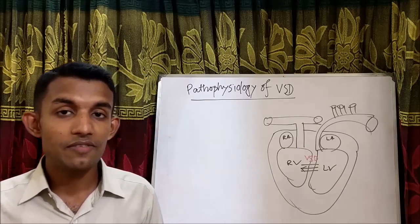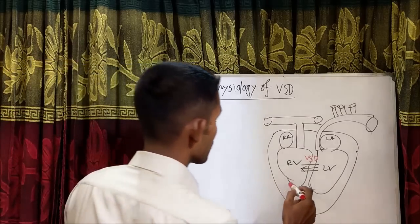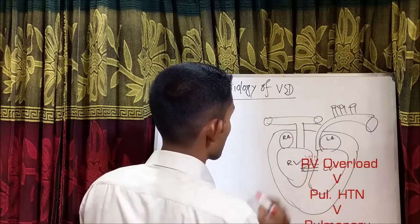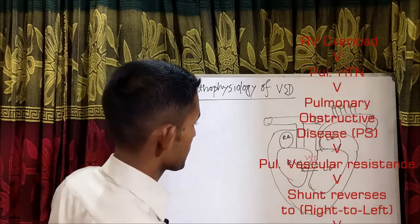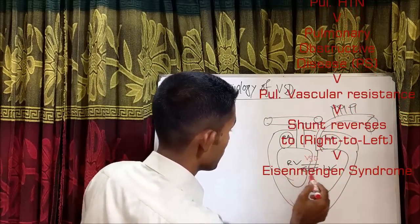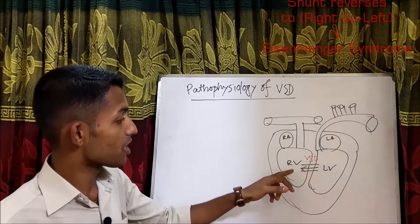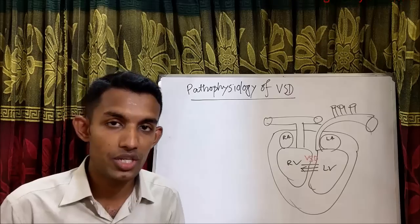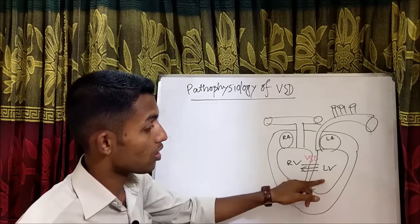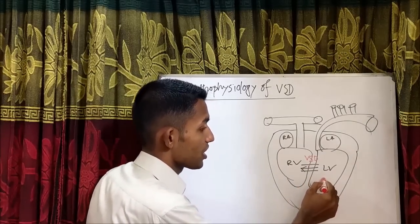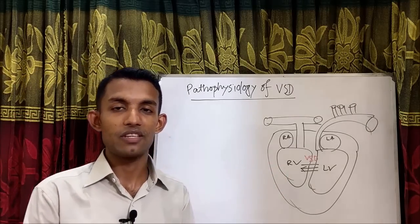But when pulmonary vascular resistance rises above the systemic vascular resistance, the shunt reverses. Whenever there is RV overload and excessive pulmonary hypertension, pulmonary obstructive disease develops so that pulmonary vascular resistance increases and the shunt reverses from left to right to right to left. Whenever the shunt reverses and becomes right to left, it is called Eisenmenger syndrome. At that time deoxygenated blood mixes with oxygenated blood, so the left ventricle receives deoxygenated blood which is sent to the whole body, causing cyanosis.